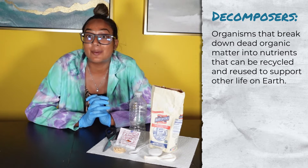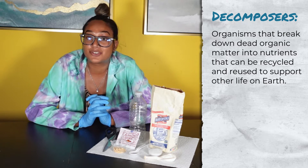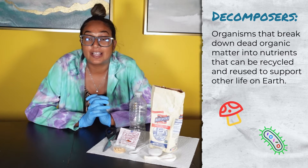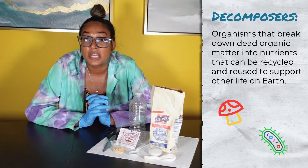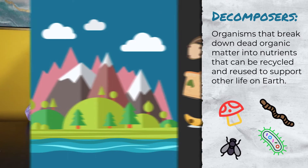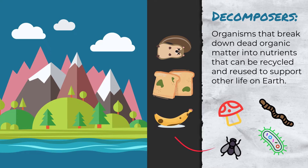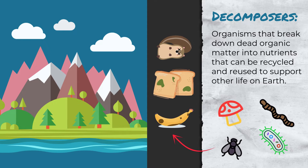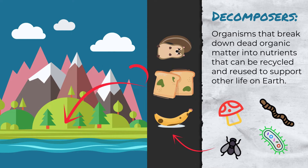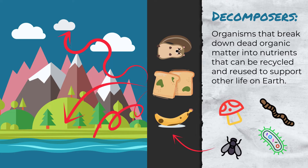Some examples of decomposers are bacteria, fungi like mushrooms, earthworms, and flies. What these things do is they break down dead bodies and dead organisms to be able to put their nutrients back into the soil, back into the air, back into the water.